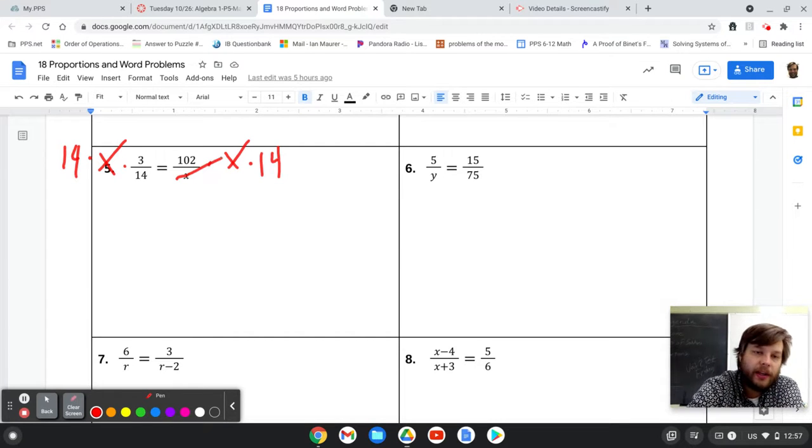Multiplying the right side by x can cancel out the x, but it doesn't cancel out the 14. Multiplying the left side by 14 cancels out the 14, but it doesn't cancel out the x.